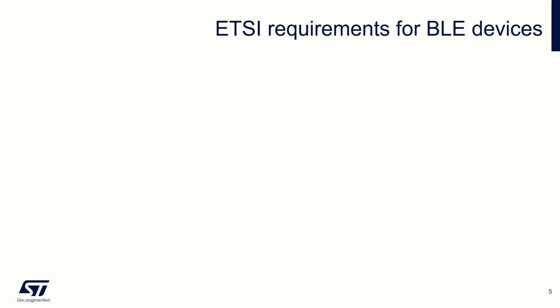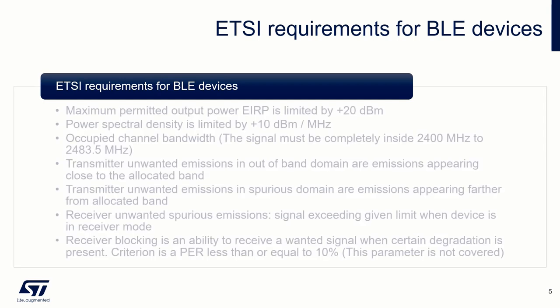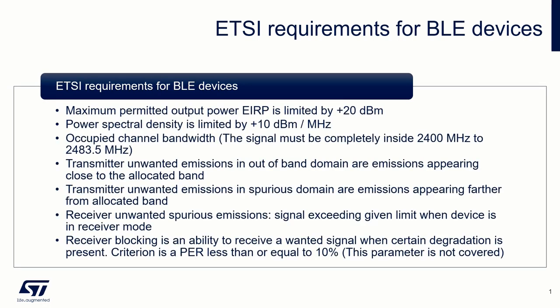The devices must fulfill the following requirements to be compliant with ETSI. Maximum permitted output power is defined as mean equivalent isotropic radiated power during a burst, limited to 20 dBm EIRP. Power spectral density is mean EIRP spectral density during a burst, limited to plus 10 dBm over MHz.